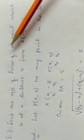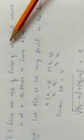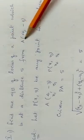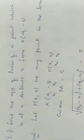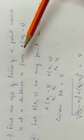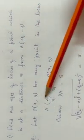The distance from P to point A is 5. Distance between P and A is PA. Let P(x, y) be any point in the locus.